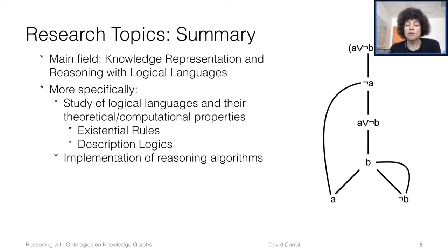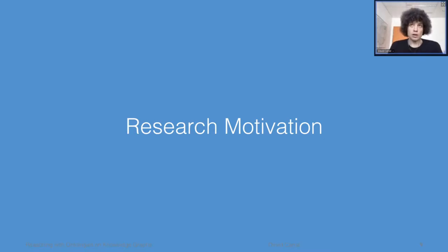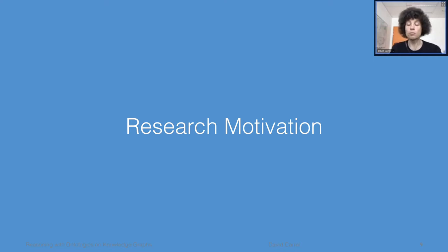More specifically, I'm interested in the study of logical languages and their theoretical and computational properties — for example, complexity of reasoning or decidability. I focus on two different languages: existential rules and description logics, and I am also interested in the implementation of efficient reasoning algorithms. After this personal introduction, I want to tell you a little bit about my research. This presentation is very high level, meant for a computer science audience that may not know anything about logics, so the idea is mostly to motivate what I'm doing.